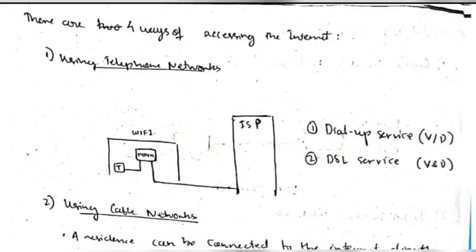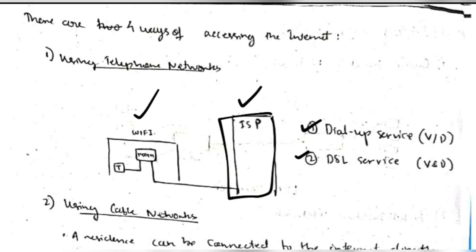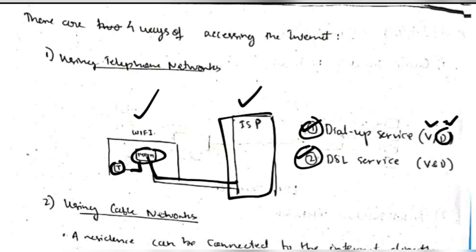There are four ways of accessing the internet. The first is using telephone networks. From an internet service provider, you have two options: dial-up service or DSL service. You connect a modem to your landline phone. In dial-up, you can use either voice or data at one time — either call or use the internet. In DSL, there are separate lines for voice and data, so you can use both simultaneously.